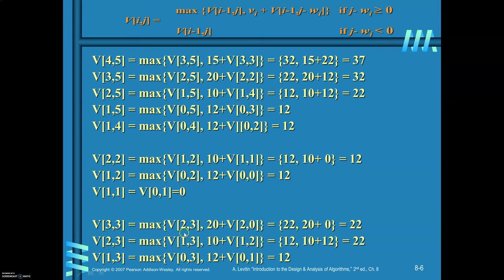V(3, 3) equals the maximum of V(2, 3) and 20 plus V(2, 0), because the weight of the third item is 3, so J minus 3 equals 3 minus 3 equals 0. To find V(3, 3), we need V(2, 3). V(2, 3) equals the maximum of V(1, 3) and 10 plus V(1, 2). Once we get V(1, 3) and V(1, 2) and substitute, V(2, 3) equals 22 and V(3, 3) equals 22. Substituting back, V(4, 5) equals the maximum of V(3, 5) which is 32, and 15 plus V(3, 3) which is 22, giving 15 plus 22 equals 37. The maximum is 37.